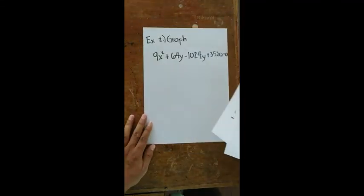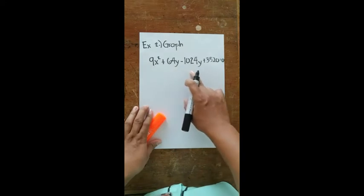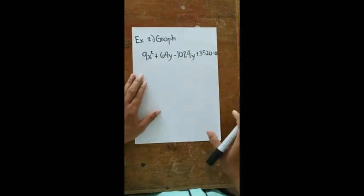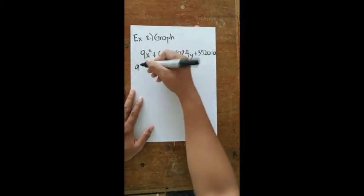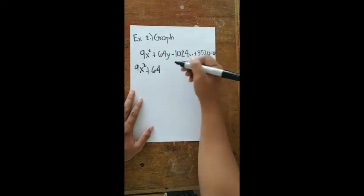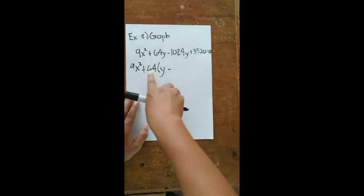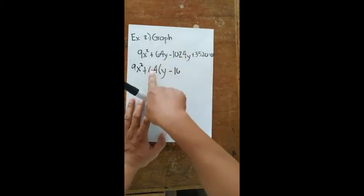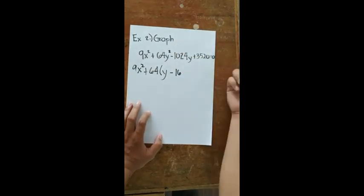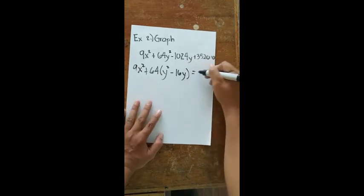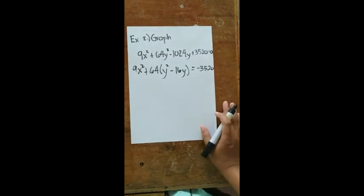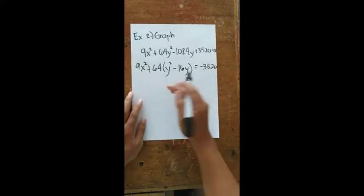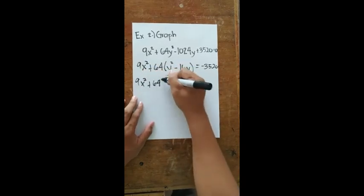For our next example, we graph 9x² + 64y² − 1024y + 3520 = 0. We need to convert this general form to standard form. Grouping terms, we have 9x² + 64(y² − 16y) = −3520. We identify that 64 multiplied by 16 gives 1024, confirming the factor.